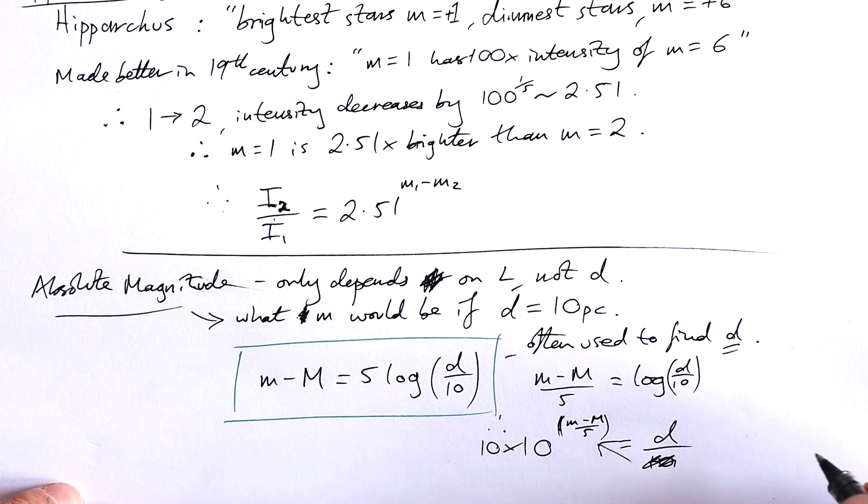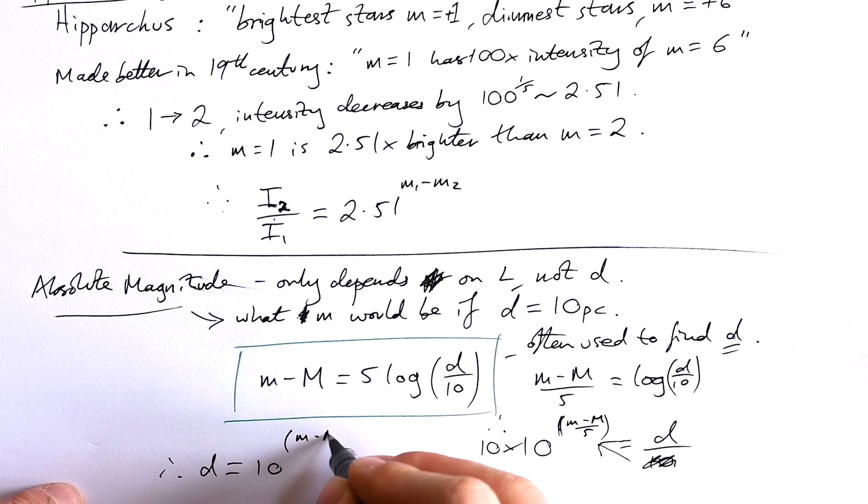If we multiply by 10, it's the same as adding one to the exponent. Therefore, d equals 10 to the power of the difference in absolute and apparent magnitude divided by five, plus one.